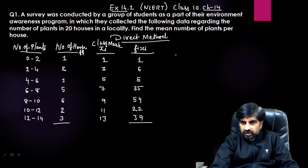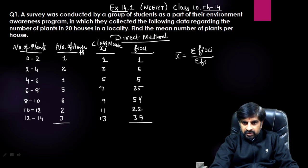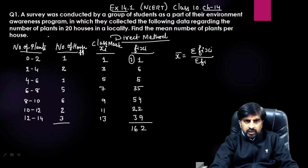The formula for finding the mean by the direct method is: x̄ = Σ(fi×xi) / Σfi. Adding the fi×xi values: 1+6+5+35+54+22+39 = 162. The sum of frequencies is 20, since 20 houses were selected.